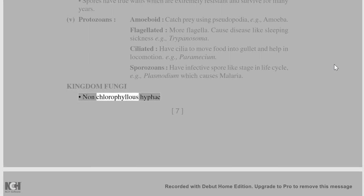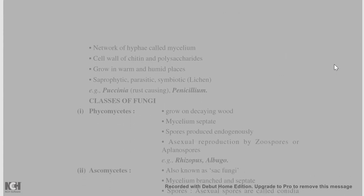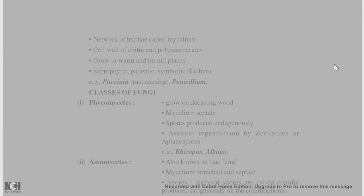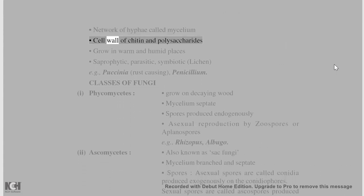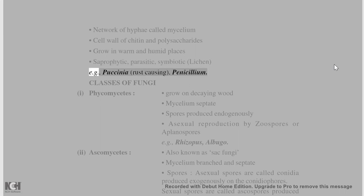Kingdom Fungi are non-chlorophyllous and have hyphae. The network of hyphae is called mycelium. Their cell wall is made of chitin and polysaccharides. They grow in warm and humid places and can be saprophytic, parasitic, or symbiotic (lichen), e.g., Puccinia (rust-causing) and Penicillium.